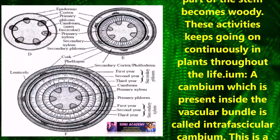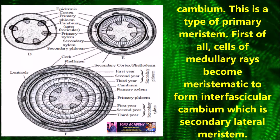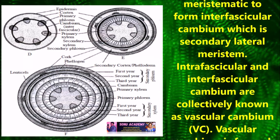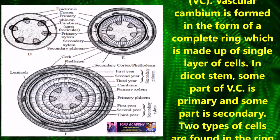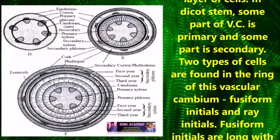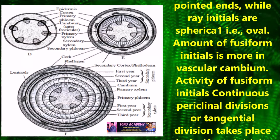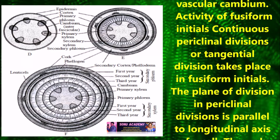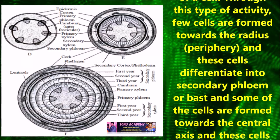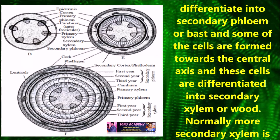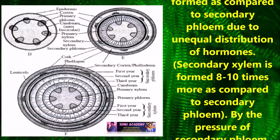The amount of fusiform initials is more in vascular cambium. The activity of fusiform initials involves continuous periclinal or tangential divisions, where the plane of division is parallel to the longitudinal axis of the cell. Through this activity, cells are formed towards the inside and differentiated into secondary xylem, and cells formed towards the outside are differentiated into secondary phloem or bast. By the pressure of secondary phloem, primary phloem is pushed towards the outside and gets crushed.